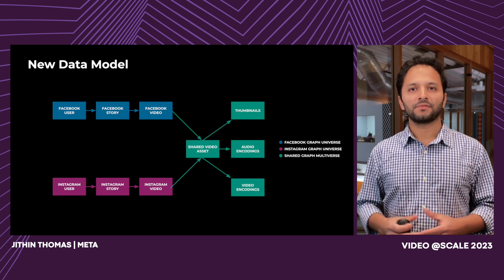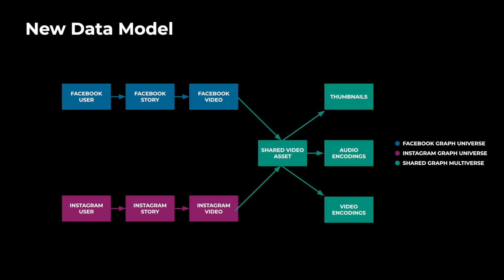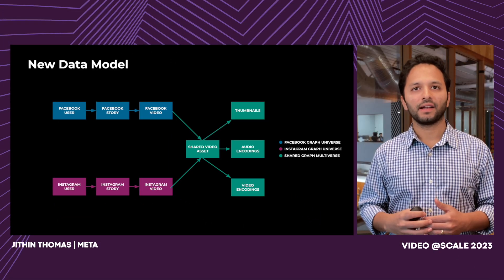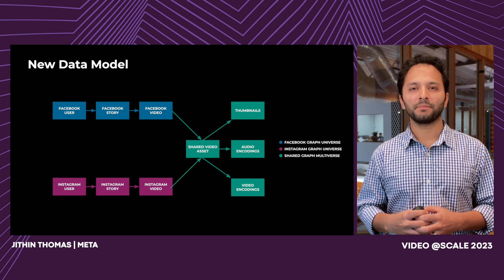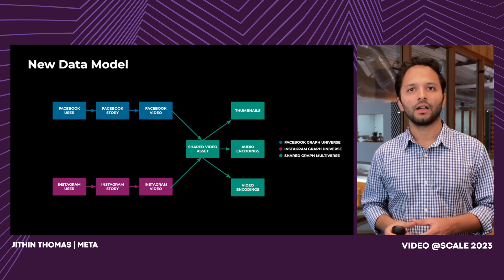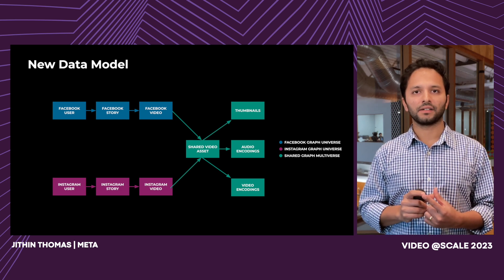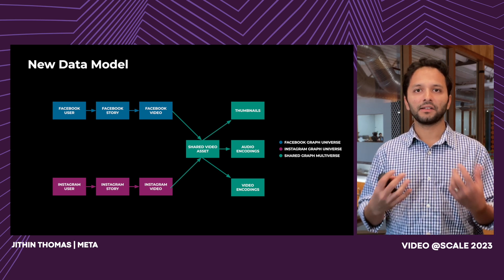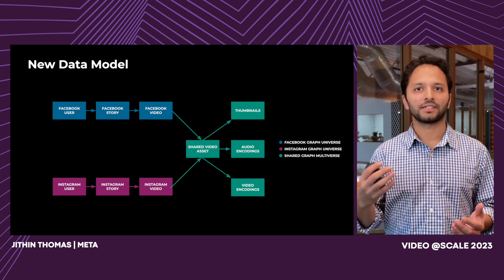We addressed this by taking advantage of another feature within our graph store called the shared multiverse. Nodes in the multiverse can have edges from nodes that belong to other universes. In the same example of a story video cross-posted from Facebook to Instagram, the parent nodes — user, story, and video — still belong to the Facebook universe. But the artifacts generated through the unified processing service are now stored in the shared multiverse, and the Facebook node takes a link to the shared asset. Cross-posting then becomes a lot easier: instead of reprocessing the video on the Instagram side, we do a copy by reference — we simply add a link from the Instagram side to the shared asset. This reduces cross-posting latency, increases reliability, and eliminates duplicate compute and storage resource usage.